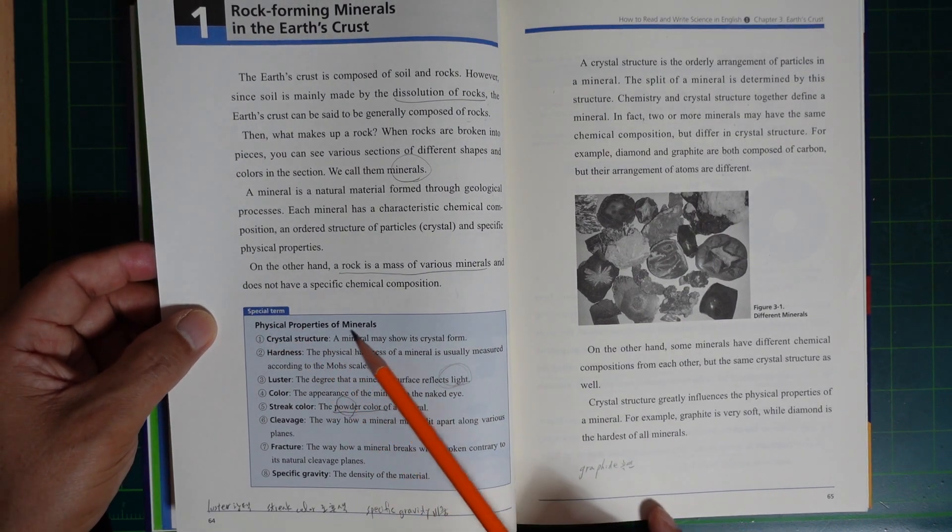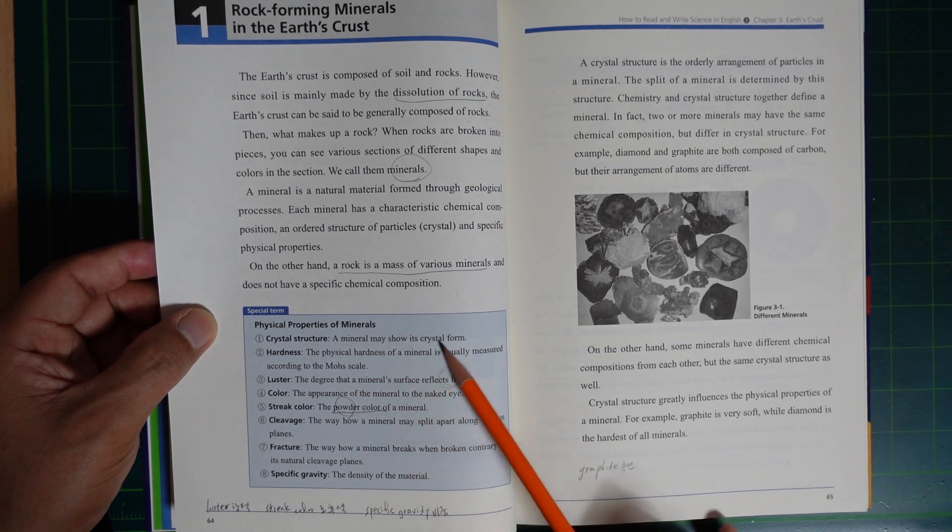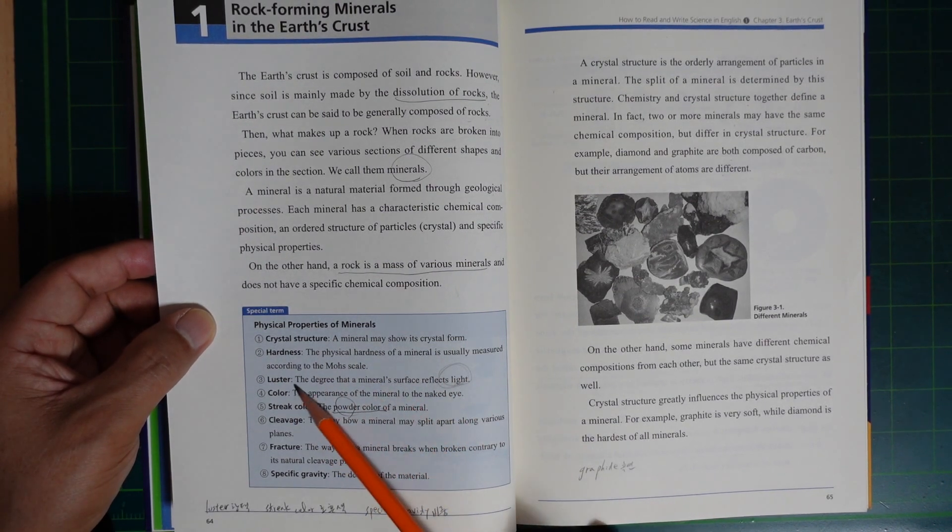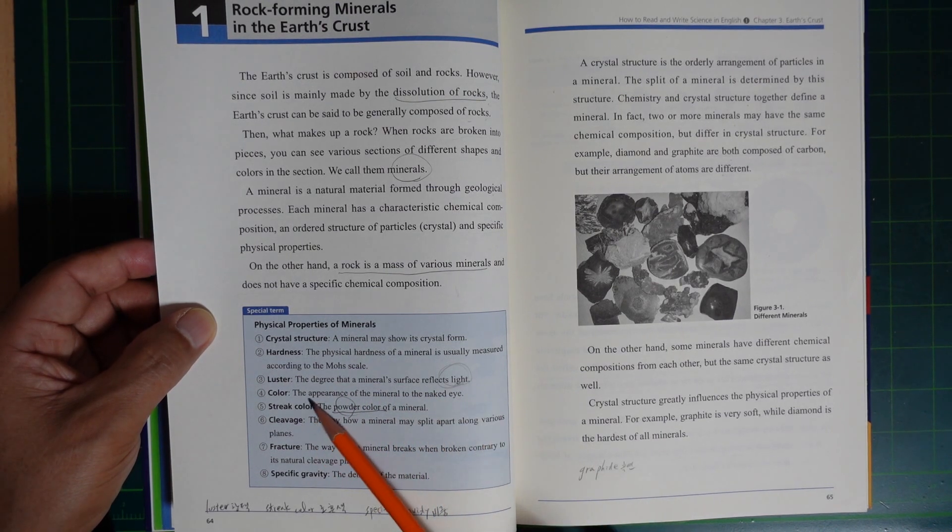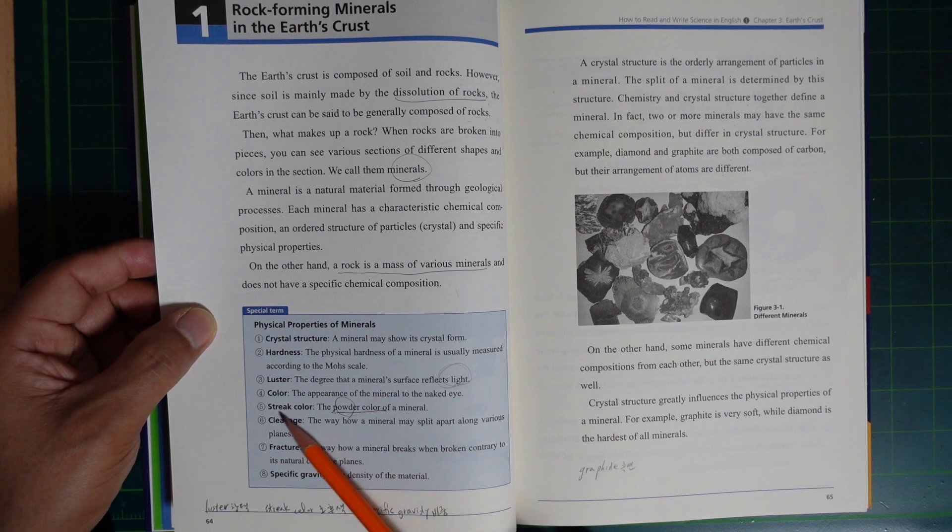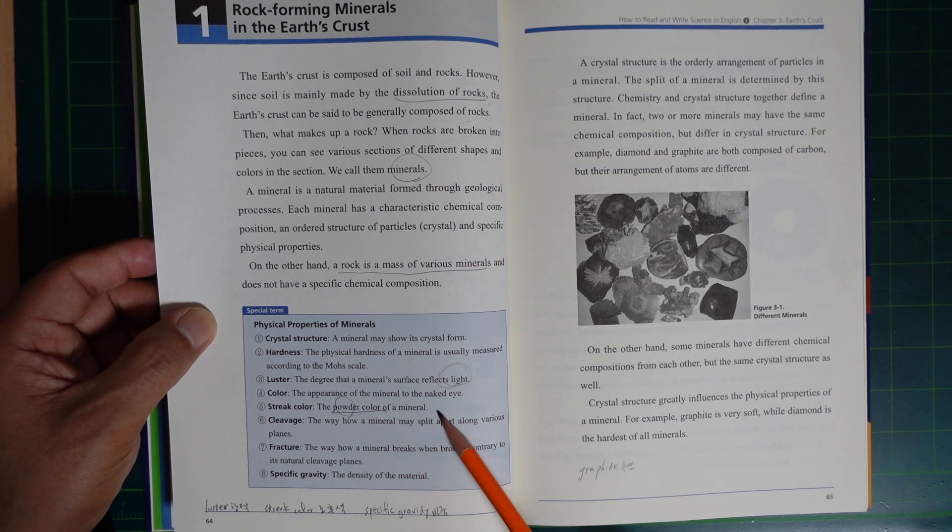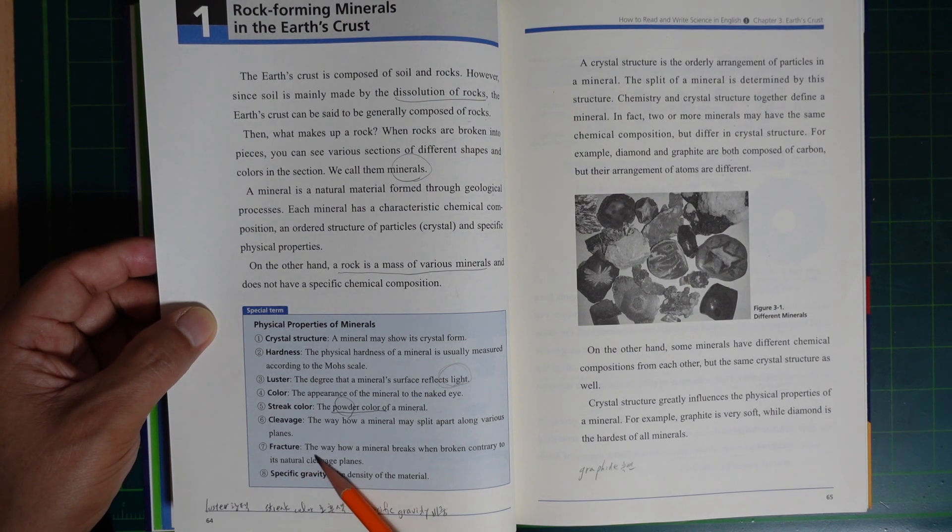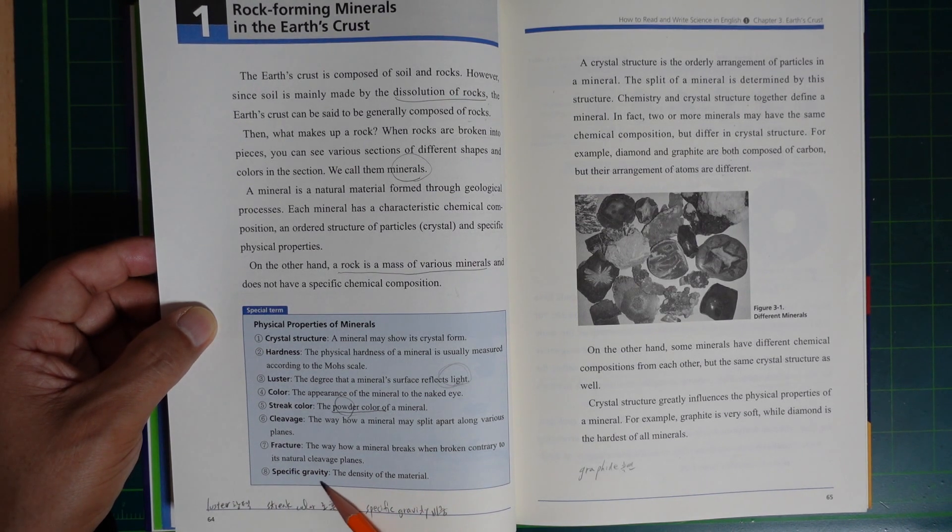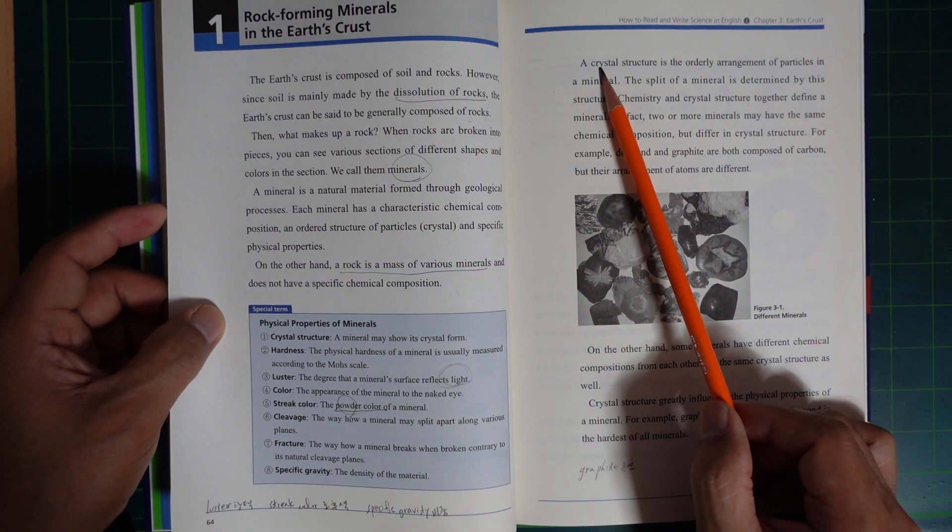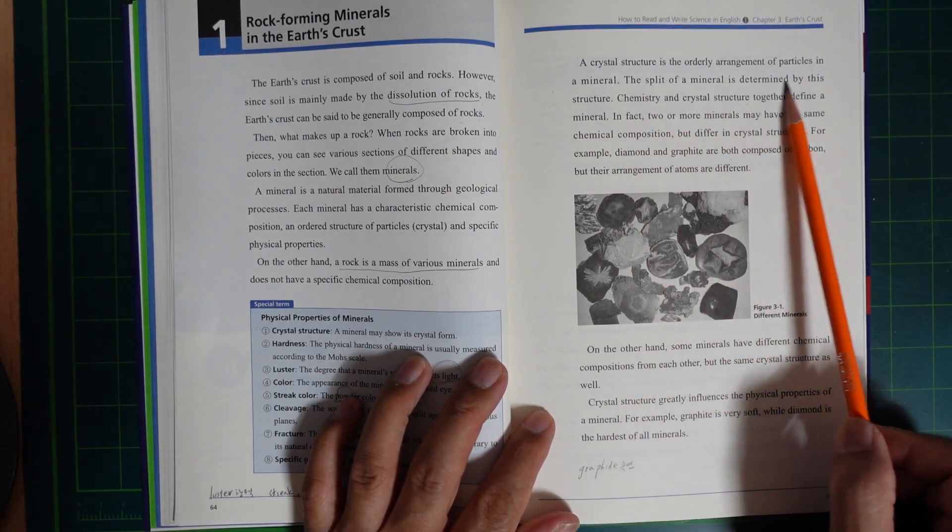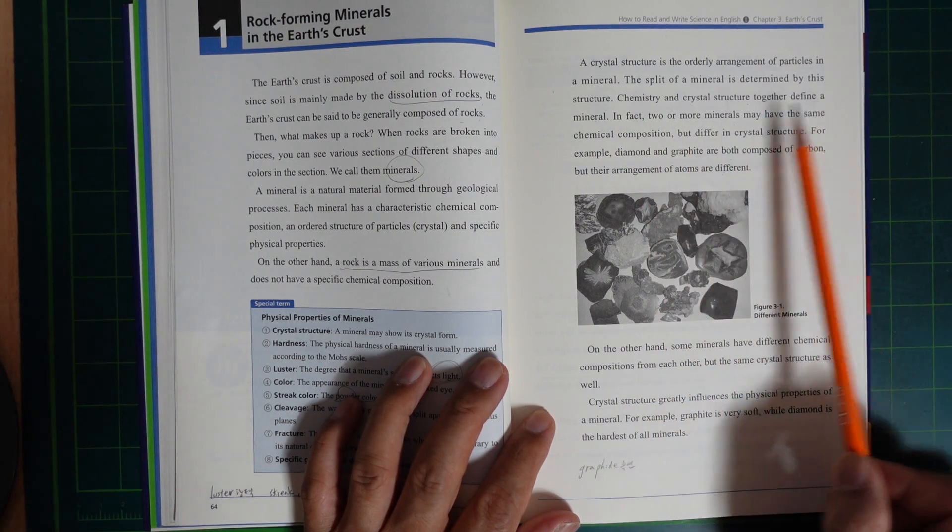Physical properties of minerals include crystal structure, minerals may show a crystal form; hardness, physical hardness of minerals is usually measured according to the Mohs scale; luster, the way that the mineral surface reflects light; color, the appearance of the mineral to the naked eye; streak color, the powder color of a mineral; cleavage, the way a mineral splits apart along various planes; fracture, the way a mineral breaks when broken contrary to its natural cleavage planes; and specific gravity, the density of the material. The crystal structure is an orderly arrangement of particles in a mineral. The shape of a mineral is determined by this structure. Chemistry and crystal structure together define a mineral.